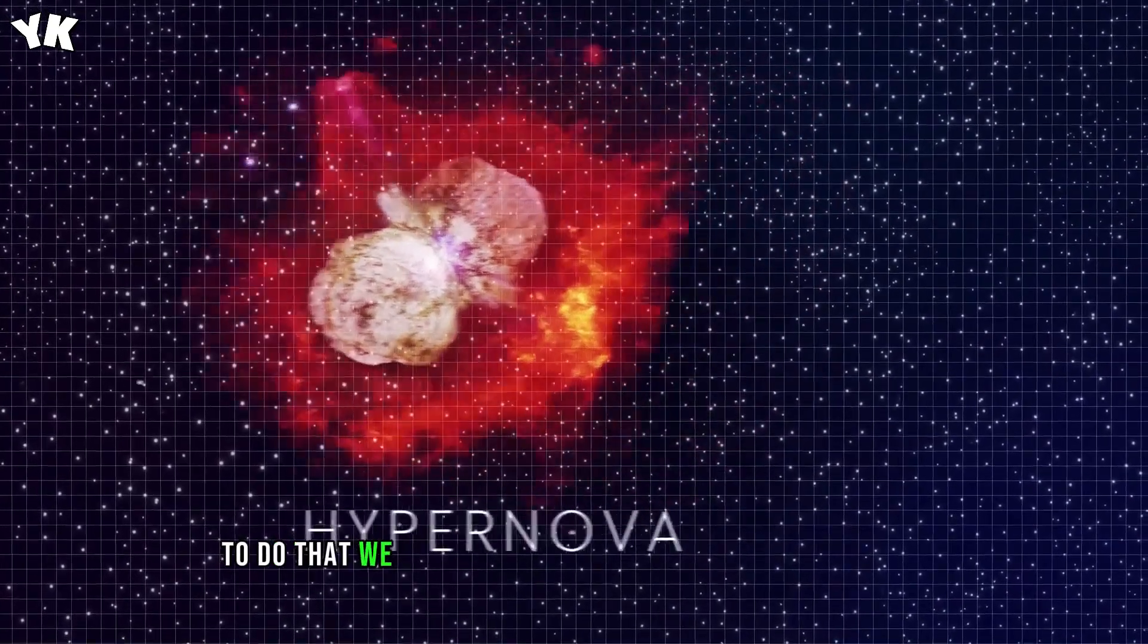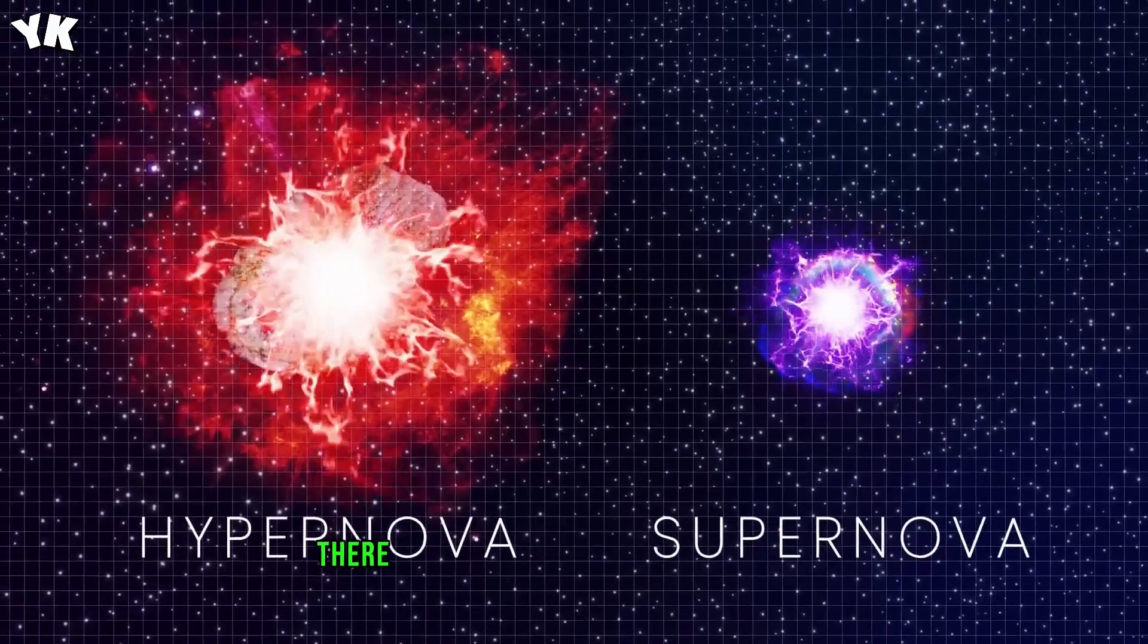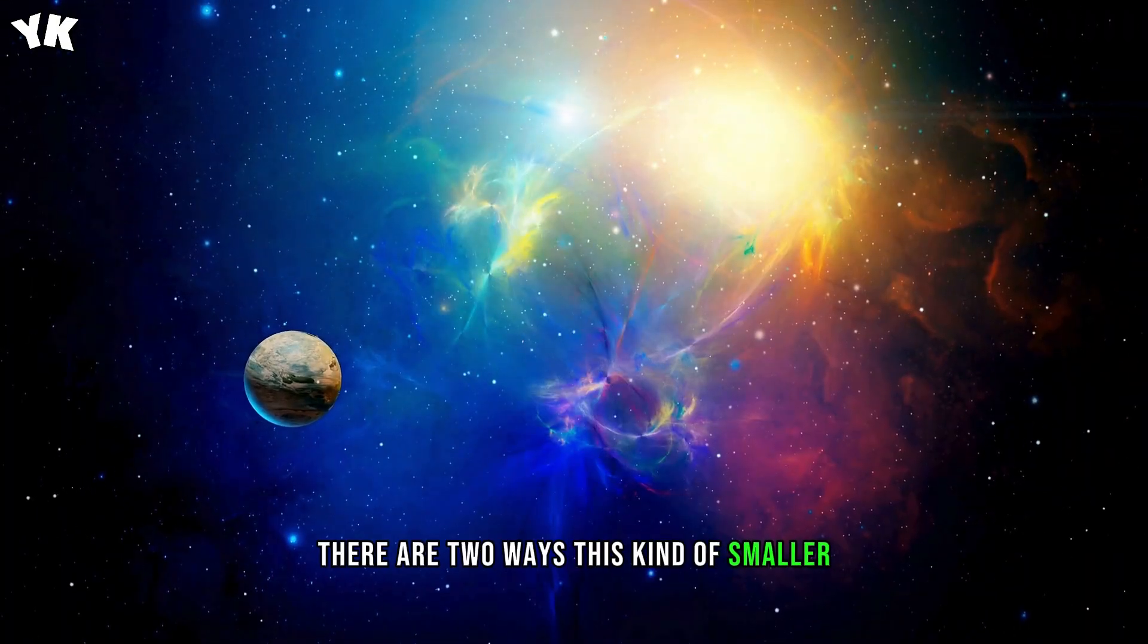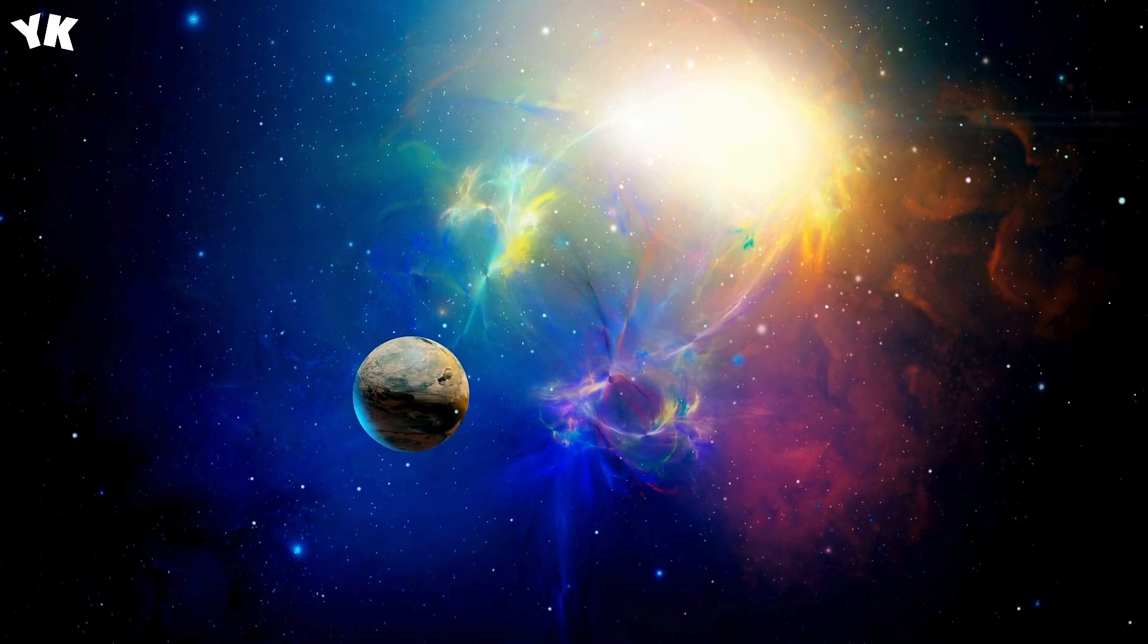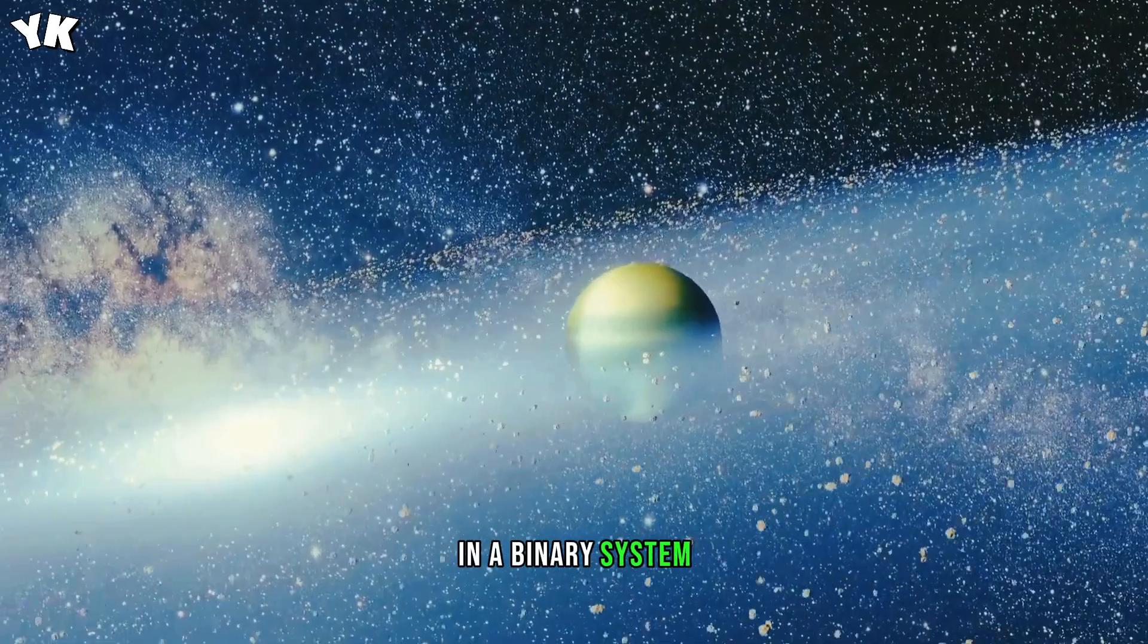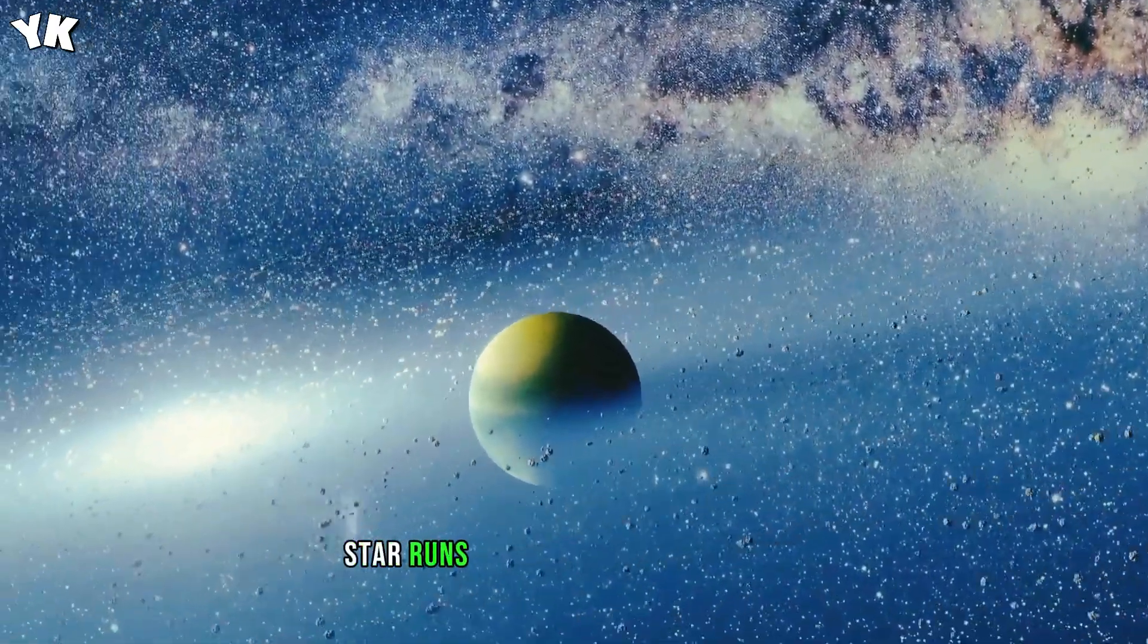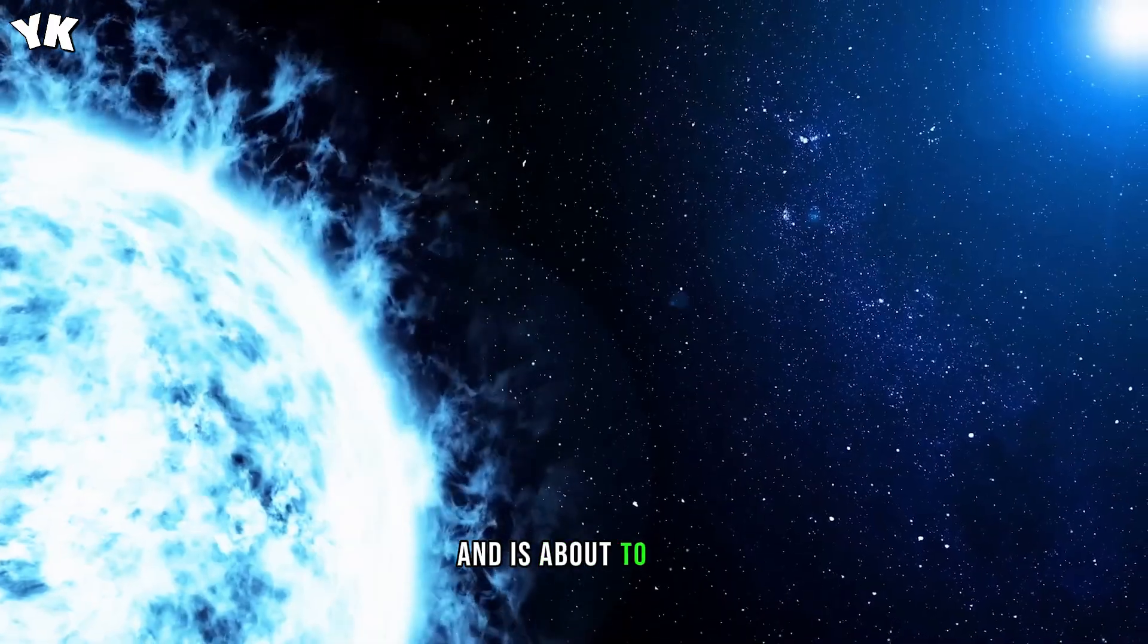To do that, we first need to dissect its smaller brother, the supernova. There are two ways this kind of smaller explosion can be formed. The first one can occur in systems where two stars orbit one another in a binary system. The other comes from a white dwarf when a smaller sized star runs out of fuel in its core and is about to die.